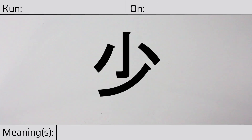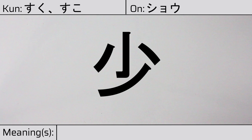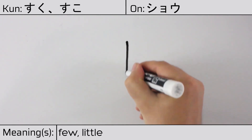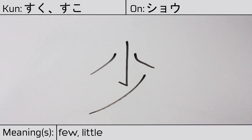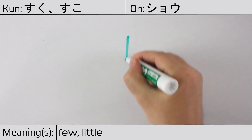Welcome to this lesson on Japanese kanji. Today, we'll be discussing this character. This kanji has kunyomi or Japanese readings of suku or suko, and it has an onyomi or Chinese reading of shou. This character has the meanings few or little. Here is the stroke order.